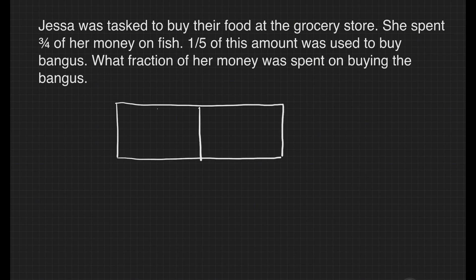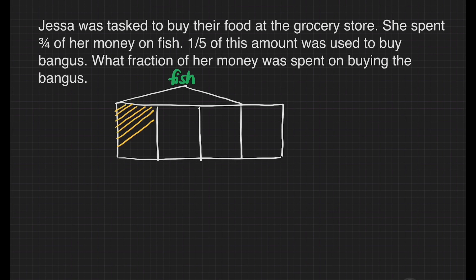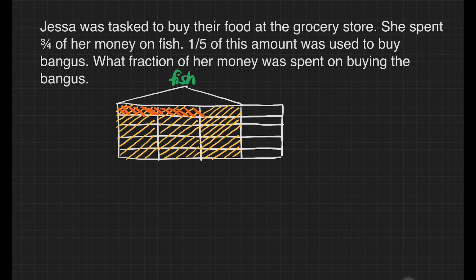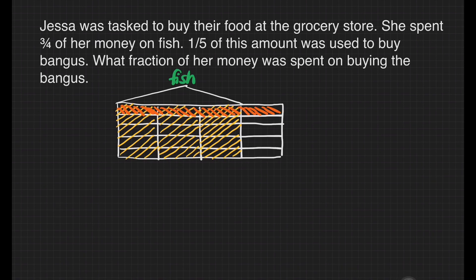We'll use the block model approach in solving this problem. We'll make a box that is divided into 4 equal parts, and 3 of those parts were spent on fish. One fifth of this amount was spent on bangus, so let's shade that part. Let's divide this whole section into 5 equal parts and shade one fifth of it. The answer for this problem is the parts that are being shaded twice. How many boxes were shaded twice? That is 3 out of 20 parts. This is our final answer.